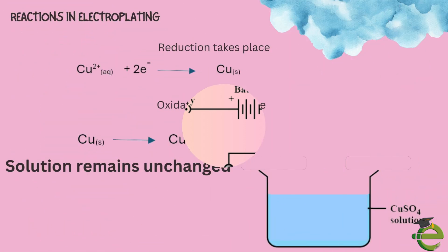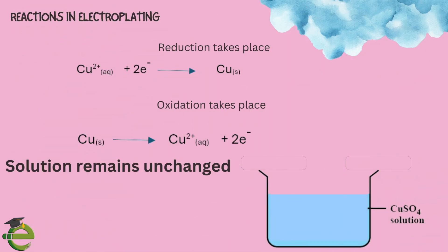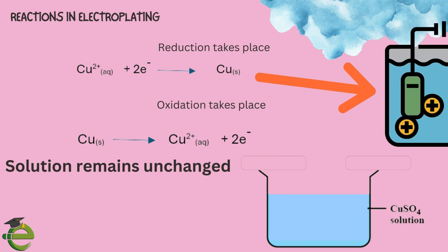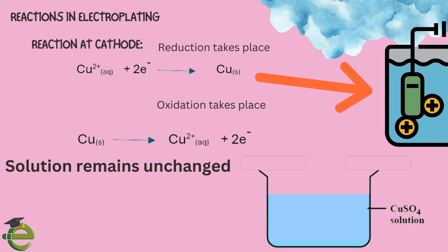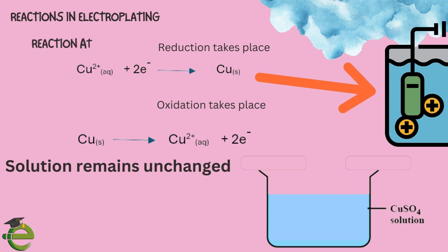Let us see the reactions in electroplating. At the cathode, reduction takes place. Copper ions in the solution having a plus-2 charge are attracted by the cathode, where they gain electrons and get reduced to copper metal.